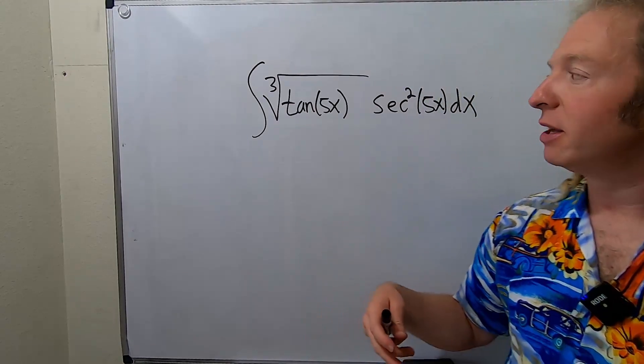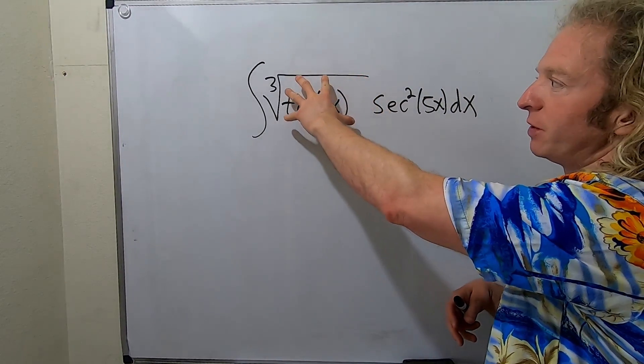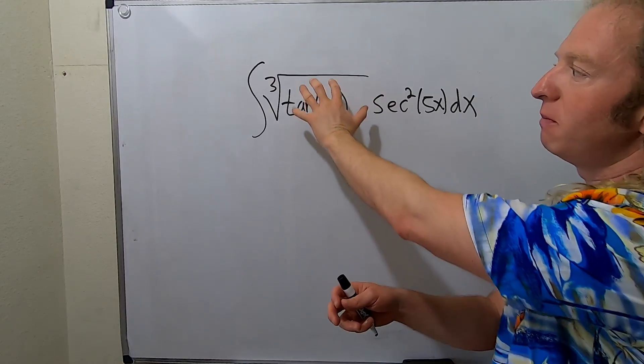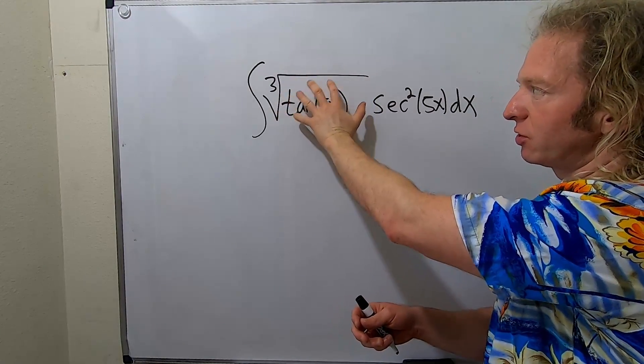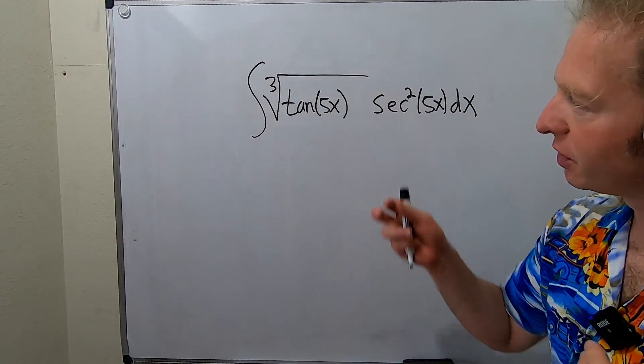If you're wondering why, it's because we have a cube root function here. So we're actually going to let u be what's inside this cube root function. So that will let us work it out. So let's try it.